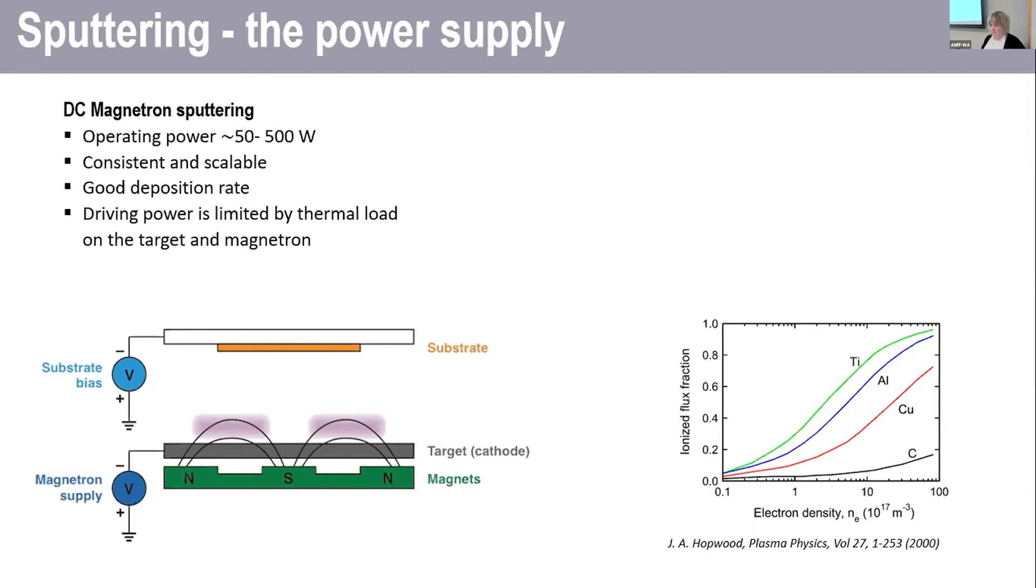In a DC system, if you want to increase the density of the plasma, you just increase the power. But this is limited by a thermal load on the target. So essentially, at some point you can increase the power so much that you just melt the target. And that gives you a limit on what energies you can access.